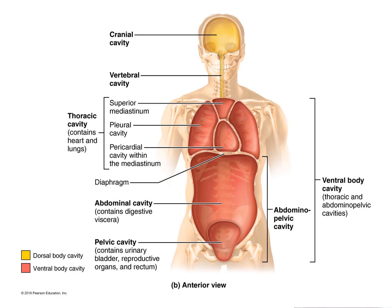Moving inferior, we can observe the abdominal pelvic cavity, extending from the diaphragm all the way down. We can see that the pelvic cavity is inferior to the abdominal cavity, and notice where the pelvic cavity starts in relation to the pelvic bones. Now let's look at the organs found in these cavities.